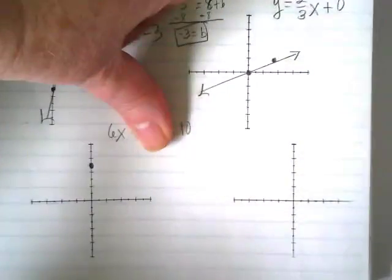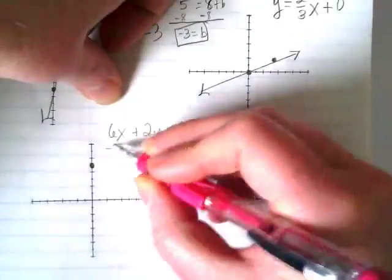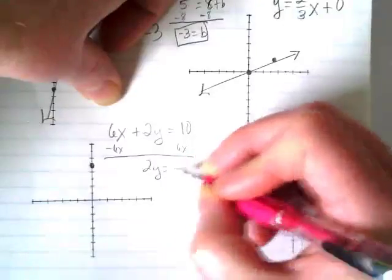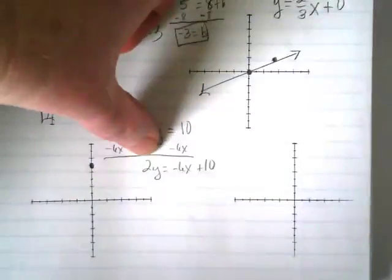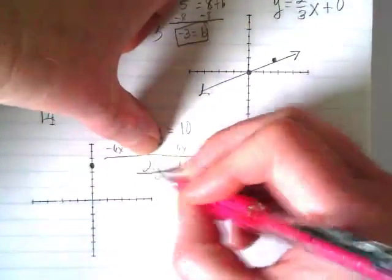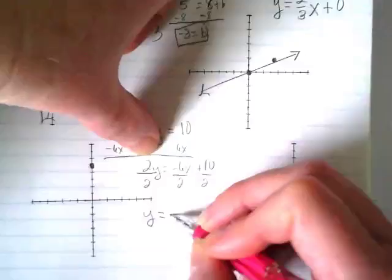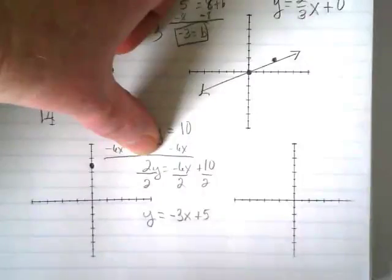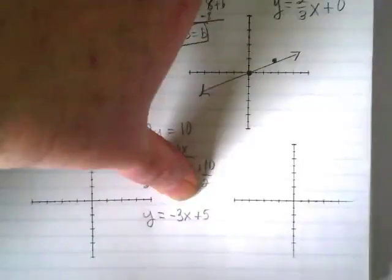So why don't we go ahead and just turn it into y equals mx plus b and find out what our slope is. We know where we're starting. So I'm going to subtract the 6x. I get 2y is equal to negative 6x plus 10. We're going to divide by what number? 2. Every part of this gets divided by 2. That leaves the equation as y is now equal to negative 3x plus 5. We already knew about that plus 5 from our cover-up method, right? But now we know our slope is negative 3 over 1.